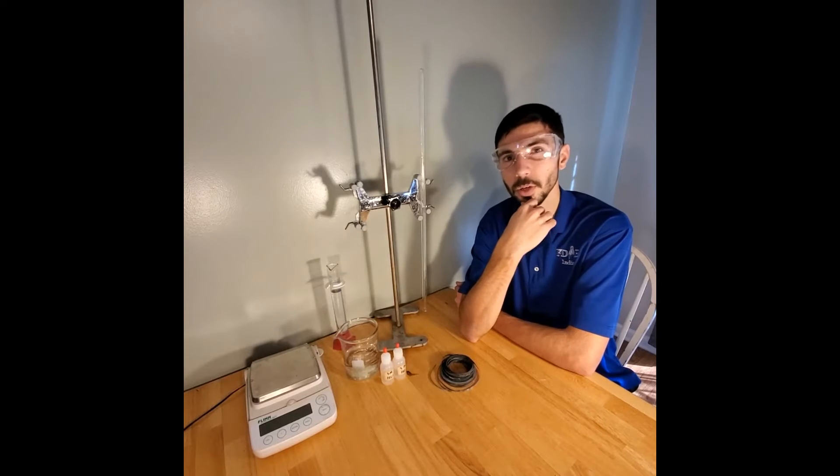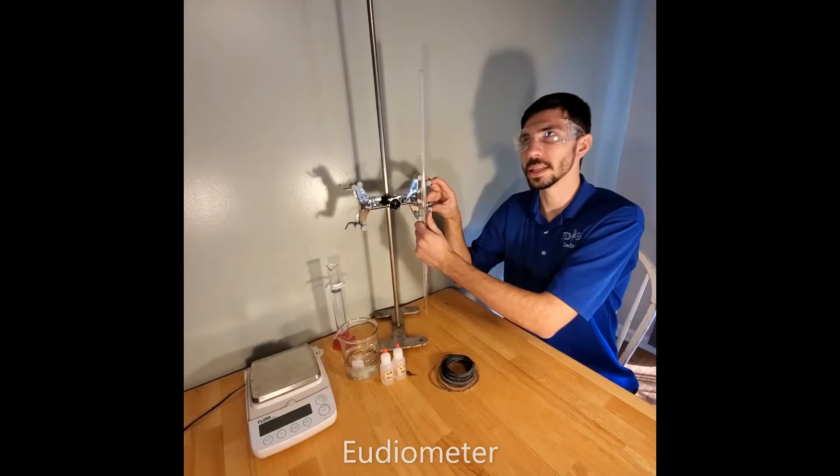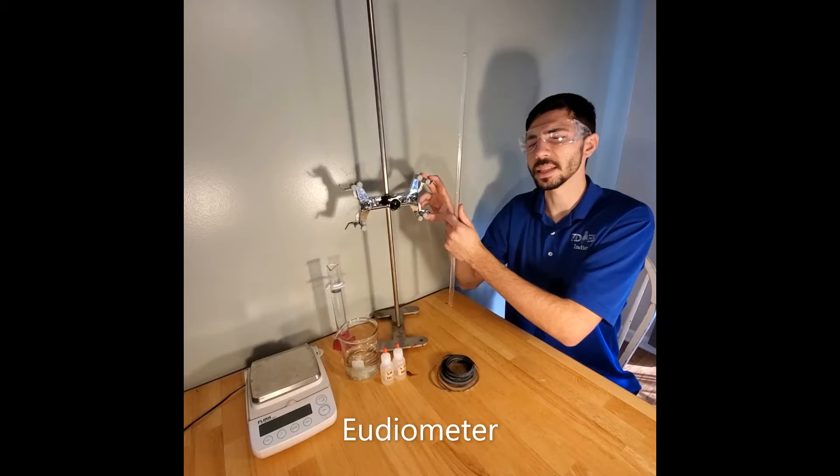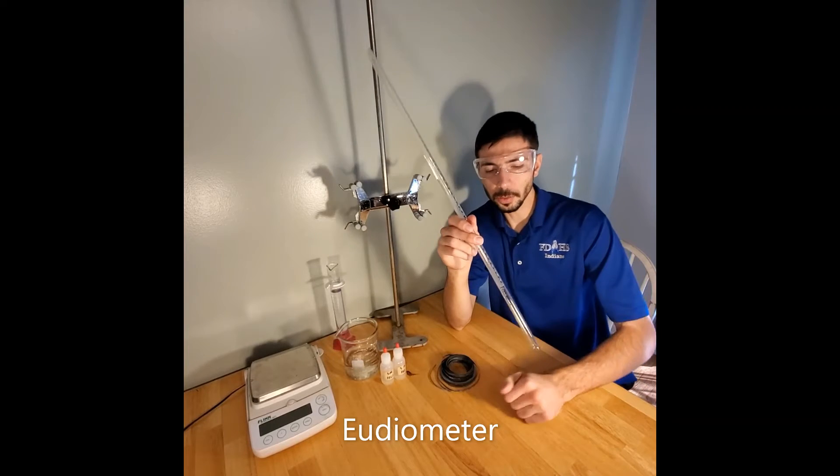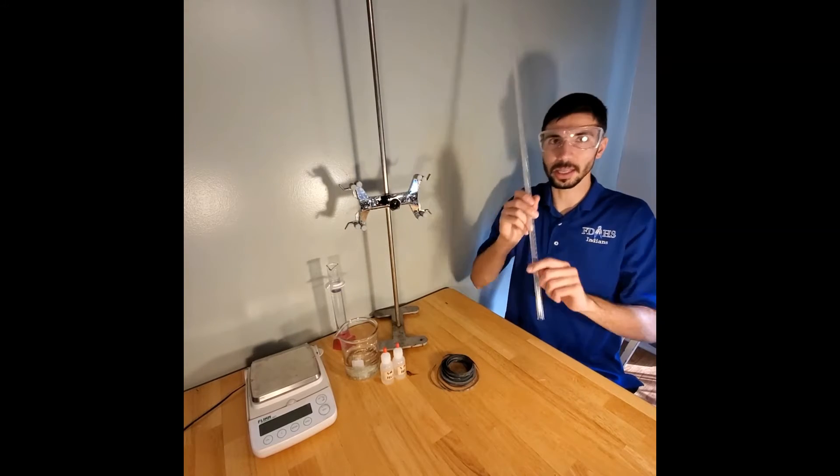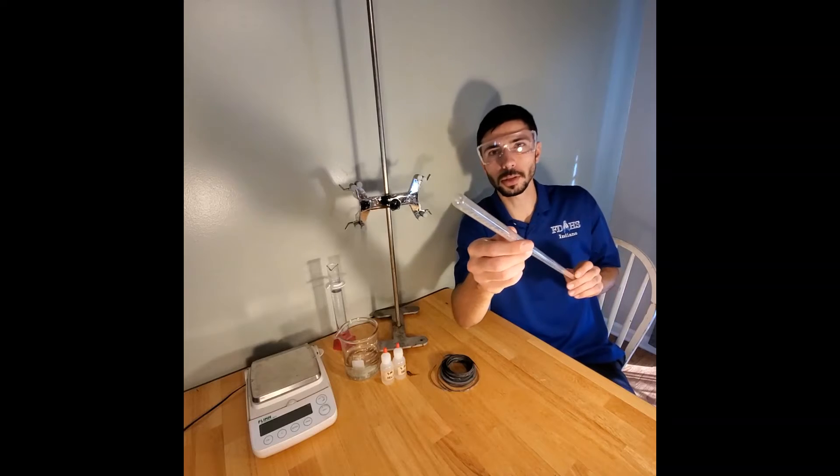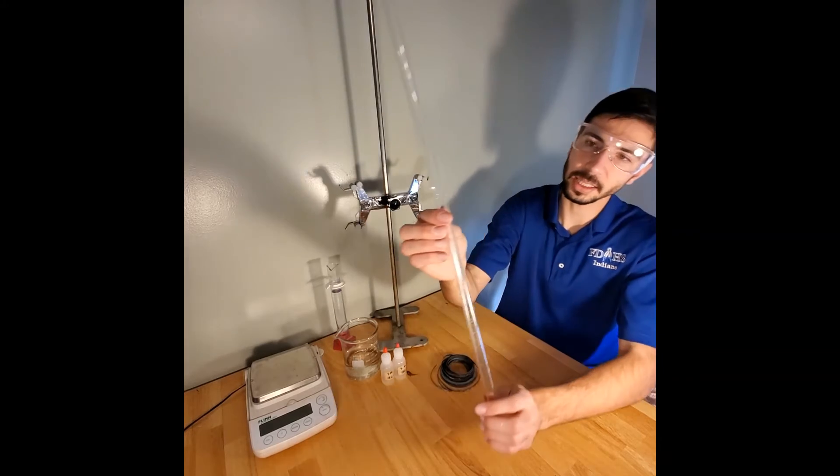Well in science and chemistry we have a special piece of equipment for that and that's right here. It is called a eudiometer, that's E-U-D-I-O-M-E-T-E-R. Essentially what a eudiometer is, it's a really long test tube. It's open on one end and closed on the other, and it has markings.